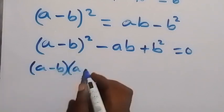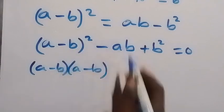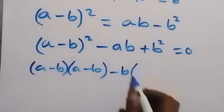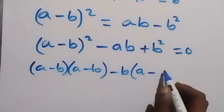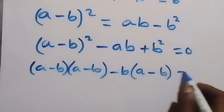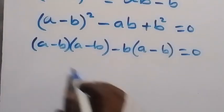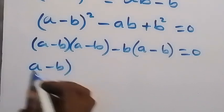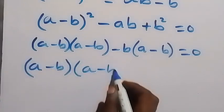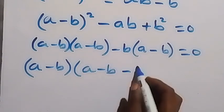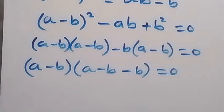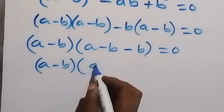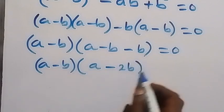Let's factor. We factor out b from the second term, giving us a minus b multiplied by a minus b, minus b times a minus b. Factoring out the common factor a minus b, we get a minus b multiplied by a minus 2b equals zero.